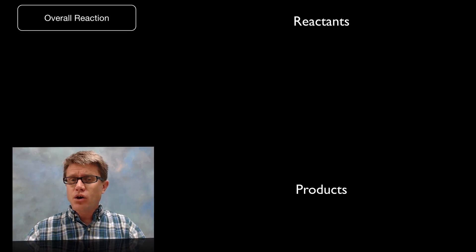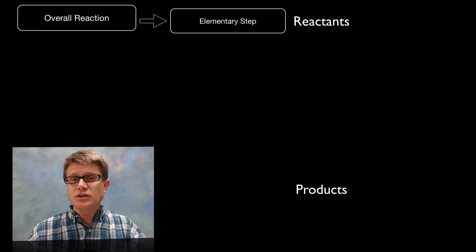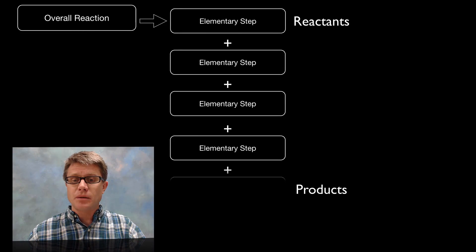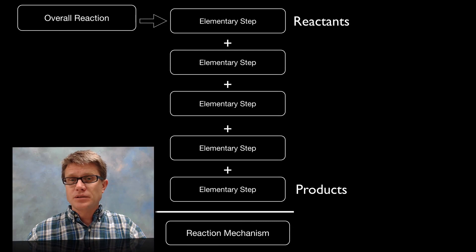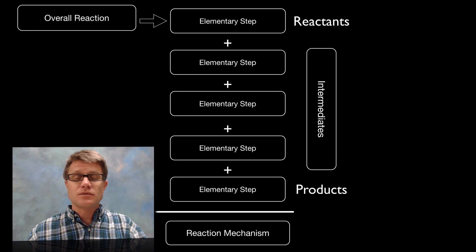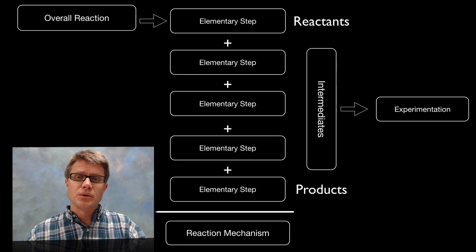And so essentially in an overall chemical reaction we're going from reactants to products, but it's not just in one step. It's elementary step after step, and finally we have this whole reaction mechanism. And so what do we call the things between the products and the reactants, the things that appear but then disappear? Those are going to be the intermediates. And we can't necessarily see those, and so we have to figure those out through experimentation.